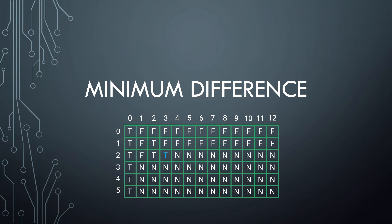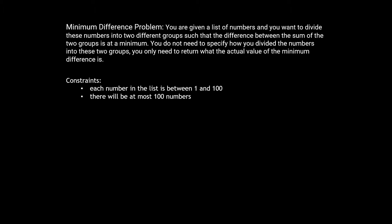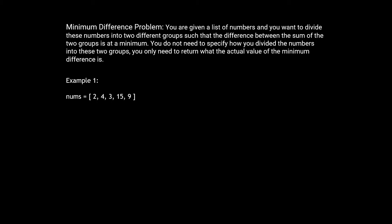In this video we're going to look at the minimum difference problem. For this problem you're given a list of numbers and you want to divide these numbers into two different groups such that the difference between the sum of the two groups is at a minimum. You do not need to specify how you divide the numbers into these two groups — you only need to return the actual value of the minimum difference. Each number in the list is between 1 and 100 and there will be at most 100 numbers in the list.